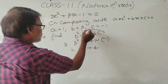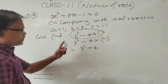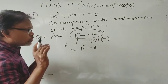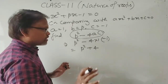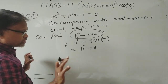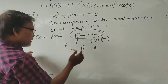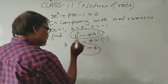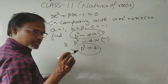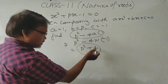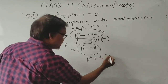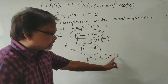B² − 4AC = p² − 4(1)(−1) = p² + 4. Now, as you know, if B² − 4AC > 0, then the roots are real and distinct (unequal). p² is always positive because it is a square, and 4 is also positive. So p² + 4 is always greater than 0 for any value of p, whether negative, zero, or positive.